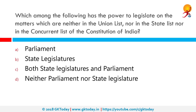Which among the following has the power to legislate on matters which are neither in the union list, nor in the state list, nor in the concurrent list of the Constitution of India? The correct answer is Parliament. The subjects not enlisted in the union, state, or concurrent list are called residuary subjects, and the power to legislate on residuary subjects lies with Parliament.